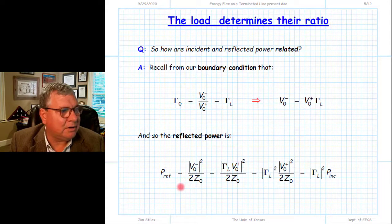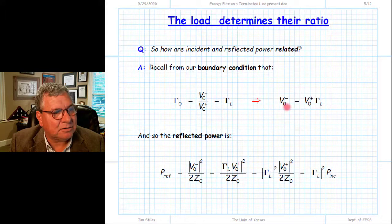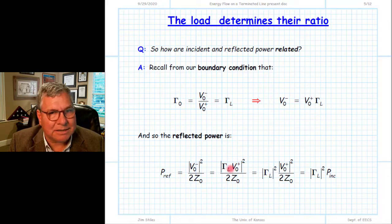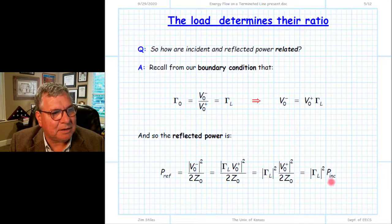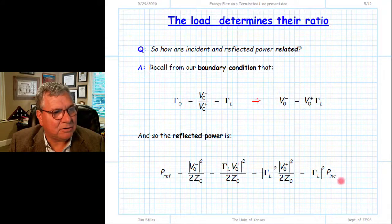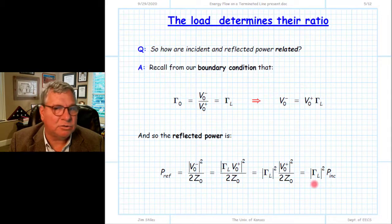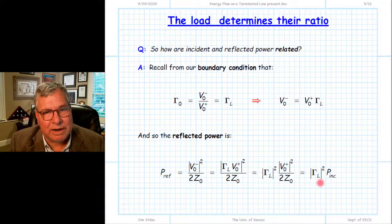This is useful when we try to determine the power associated with each wave. The reflected power is expressed in terms of V₀⁻, and we've now described V₀⁻ in terms of V₀⁺. Inserting that relationship — remembering that the magnitude of a product of two complex numbers is the product of their magnitudes — we find that the reflected power equals the incident power times the magnitude squared of γ_L. If we take the ratio of reflected power to incident power, that ratio equals |γ_L|². The magnitude squared of γ_L tells us the percentage of the incident wave that is reflected. If |γ_L|² = 0.3, that means 30% of the incident power is reflected.